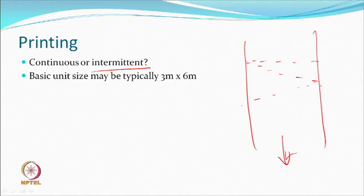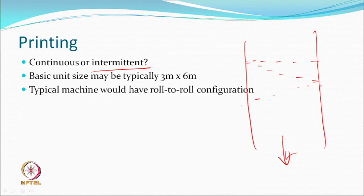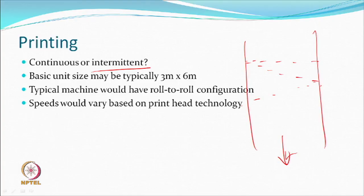The basic print unit may be 3 meters wide by 6 meters long, containing inking stations, print heads, the carriage, motion systems, and everything else. Typical industrial machines for textile printing have a roll-to-roll configuration — starting from a roll and finishing on a roll. Machines that print piece goods like T-shirts also exist. Speeds vary depending on the print head used.